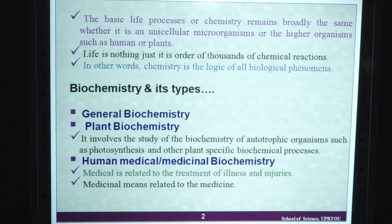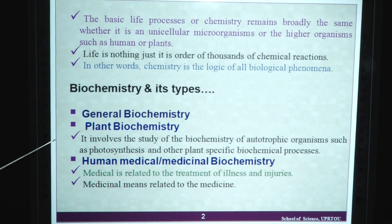Biochemistry and its types: we have general biochemistry, plant biochemistry, and human, medical as well as medicinal biochemistry. Plant biochemistry involves the study of autotrophic organisms such as photosynthesis and other plant-specific biochemical processes. Human medical or medicinal biochemistry — medical is related to the treatment of illness and injuries, while medicinal means related to medicines.